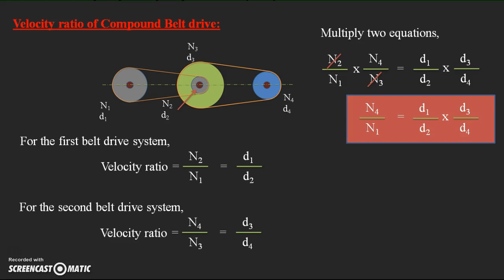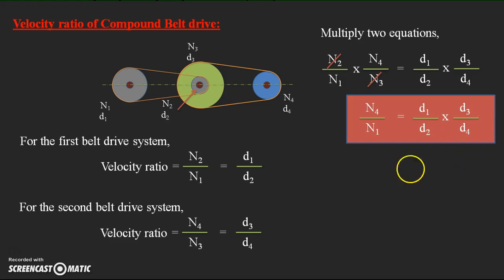These formulas are useful for finding the power transmitted by the belt from one pulley to another. Try to remember the formulas for the velocity ratio of simple belt drive and compound belt drive. I hope you understand this simple explanation for finding the velocity ratio expressions for both types of belt drive systems.